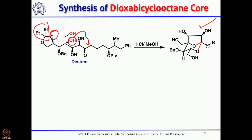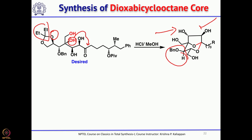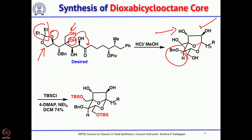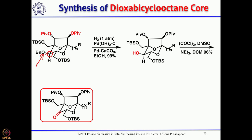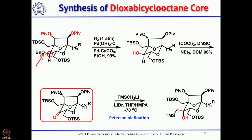What remains is to attach the side chain at one carbon and selectively functionalize other positions. The free primary hydroxyls are protected as TBS ethers using TBS chloride, triethylamine, and DMAP. The secondary hydroxyl groups are protected as pivalate esters with pivalate chloride and DMAP. The benzoyl group is then removed by hydrogenolysis to give the alcohol, and oxidation gives the ketone. Addition of trimethylsilylmethyllithium gives the Peterson olefination precursor.